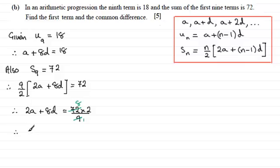So just to recap, we've got 2A plus 8D equals 16. Now I've got two equations with two unknowns, A and D. So in order to solve these we're going to use simultaneous equations. I'll number them 1 and 2.